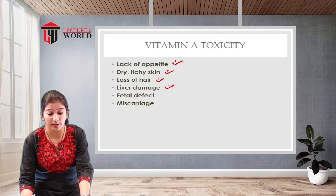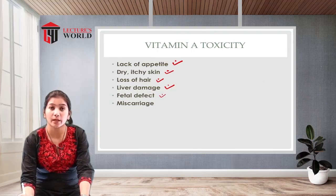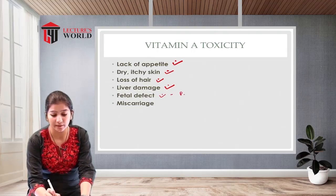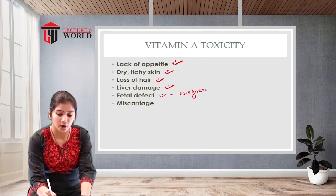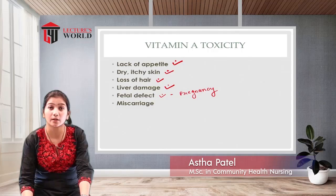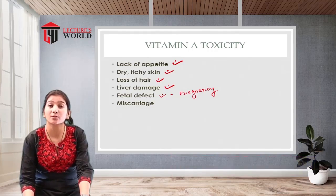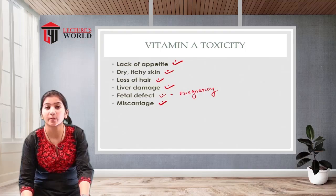More serious effects of vitamin A toxicity include liver damage. During pregnancy, if a mother has taken vitamin A in excessive amounts, that may lead to defects in the fetus. There are also chances of miscarriage because of vitamin A toxicity.